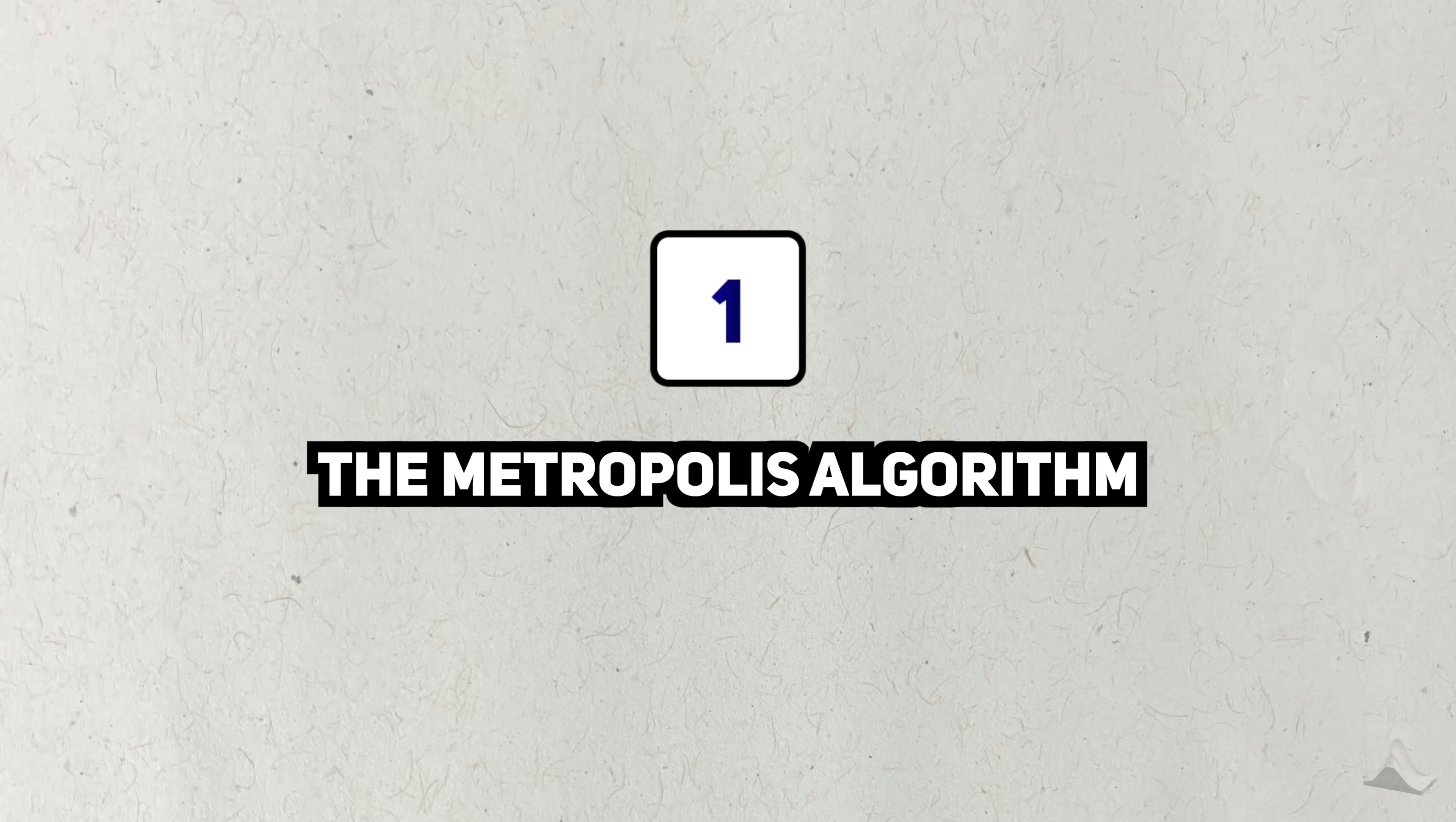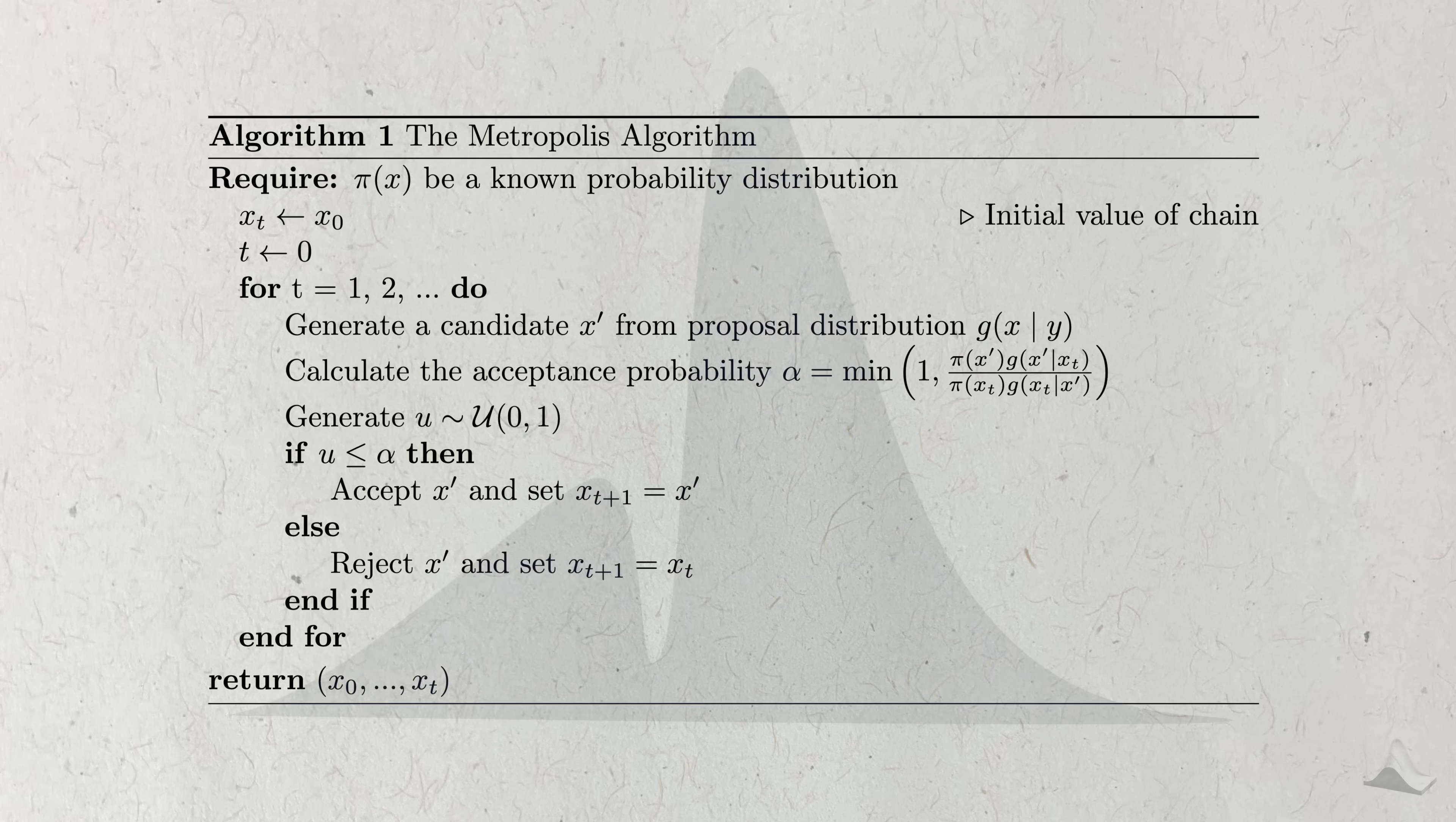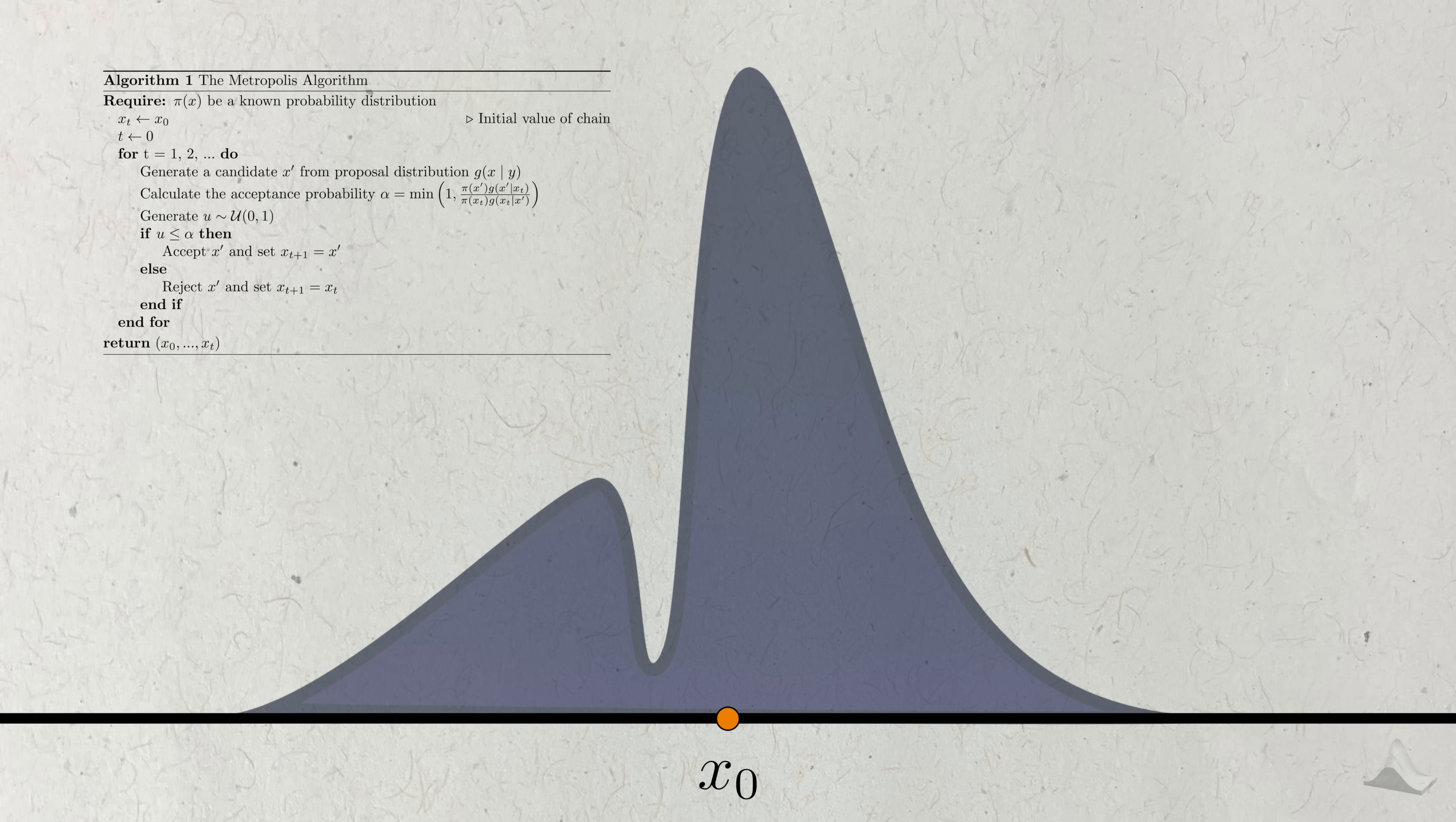The Metropolis Algorithm can be described in just a few lines, but the simplicity is deceiving. The goal of the algorithm is to recreate a sample from a known and possibly complex probability distribution. First, you start at some initial point. Then we generate a second point from a known probability distribution, which we may or may not go to. The probability that we go to this new point is given by this weird expression here. You either accept this new point and go there, or reject it and stay where you currently are.